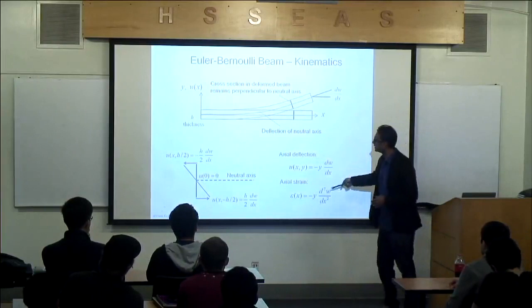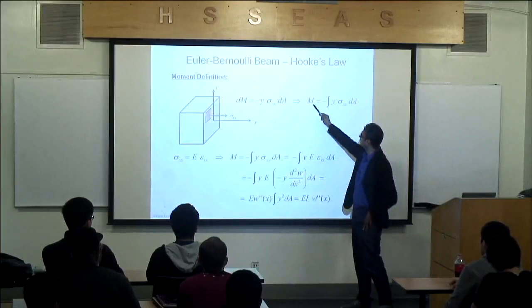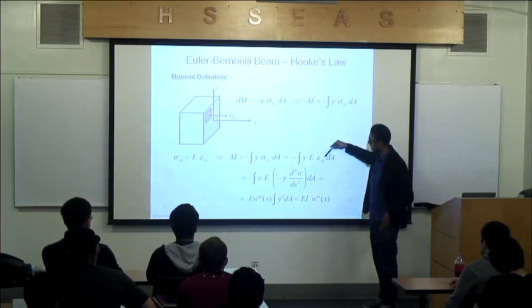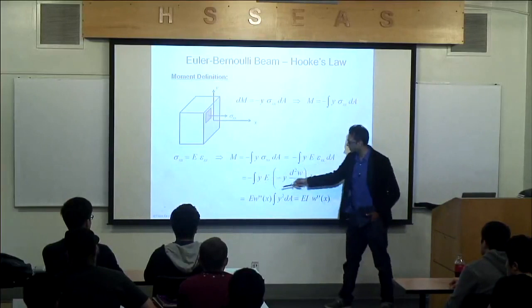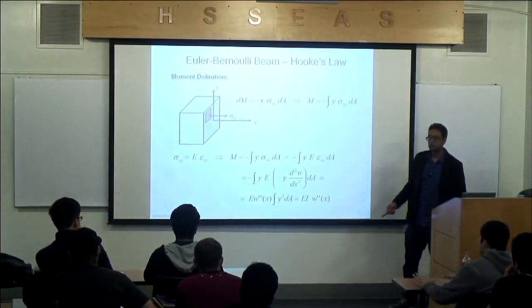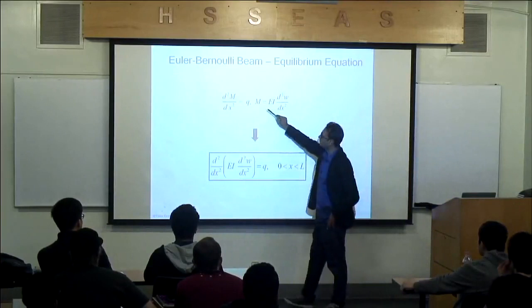We talked about what the moment represents in Euler-Bernoulli beam theory — moment is related to stress, and we found M = EI w''. The strain is really the curvature of the beam. We plugged this into the governing equation and found the equilibrium equation for the Euler-Bernoulli beam. I also did this using total potential energy, and by minimizing it, I get the weak form — which is the same as forming the weighted residual.